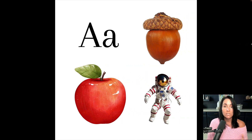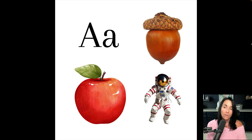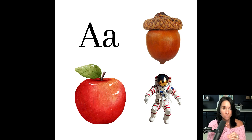We might also use something like this in the partial alphabetic stage — we have the uppercase and lowercase A, then we have the apple, the acorn, and the astronaut. So we're starting to understand that A represents the long A or short A sound across different words. It's partial because we don't see the full words — we're just pulling out sounds in these pictures and assigning them to a letter. Letter-sound correspondence. This is the beginning of phonics and the partial alphabetic stage of reading.